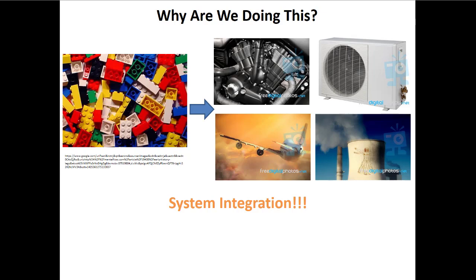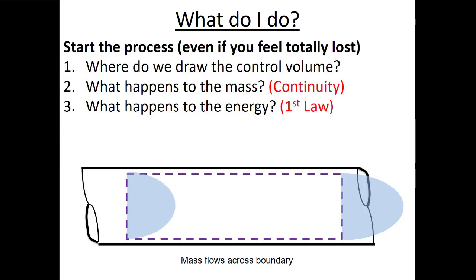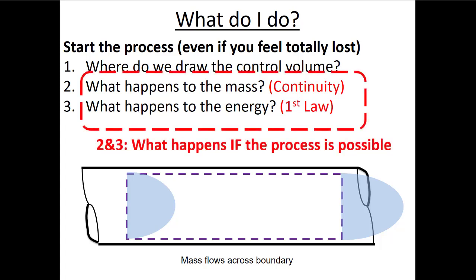We've been looking specifically at open systems. For these open systems, the first thing we do is draw a control volume. Then we do conservation of mass to make sure we're accounting for all the mass coming in and out. Then we do conservation of energy, because every little bit of mass carries energy with it — so we needed to know what was happening to the mass before we knew what was happening to the energy. But these processes only tell us what would happen if the process was possible. None of these steps will tell us if something we're trying to design can actually happen in the universe.